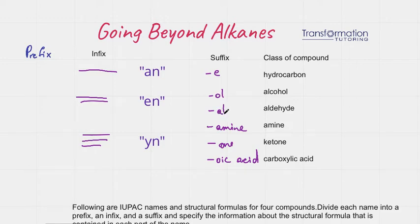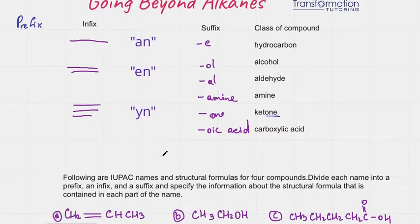If we have an aldehyde, the name will end in 'al'. Amine will end in 'amine'. Ketone will end in 'one'. And carboxylic acid will end in 'oic acid'. Let's go ahead and put this knowledge together and do this problem.